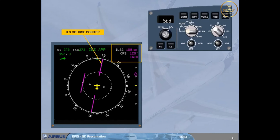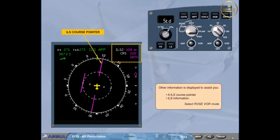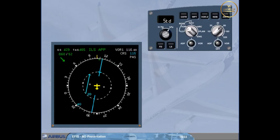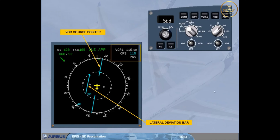Select Rose VOR mode by clicking on the mode selector. The Rose VOR mode is another raw data display. On the display, there is now a course pointer and a lateral deviation bar for the VOR, in this case VOR1. To have this display, a course must have been selected on the MCDU radio navigation page. Like Rose ILS, the information about the tuned frequency, the selected course, and which nav-aid — here, Papa Alpha Sierra — is displayed in the top right-hand corner.